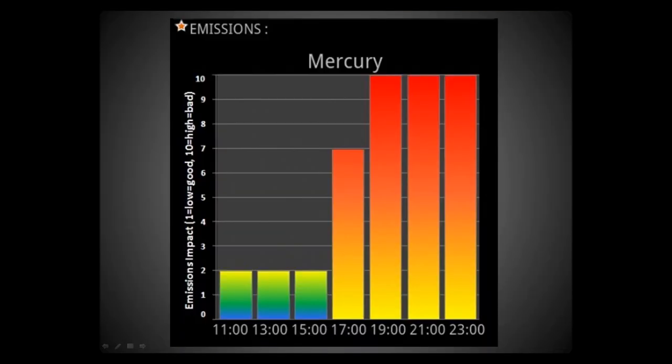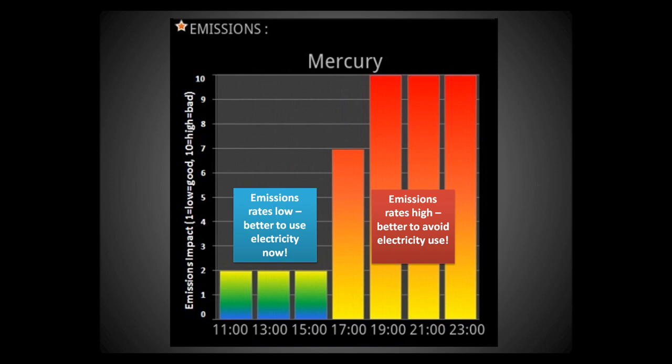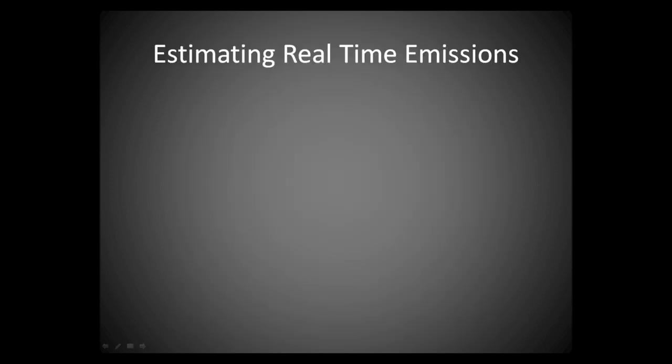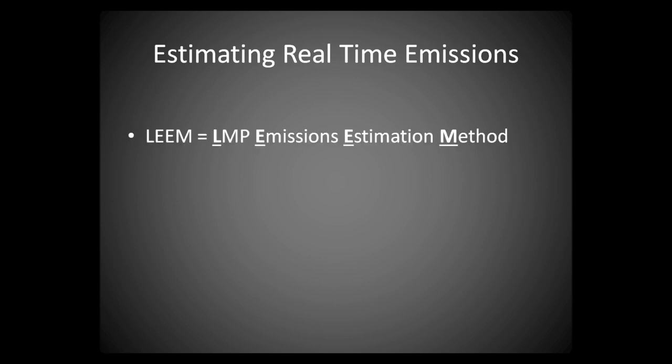Real-time emissions estimates can help people schedule their electricity use so that they use less energy when air emission rates are high. How did researchers at Wayne State University come up with this estimation technique, and how does it work? Let's go back to the beginning.